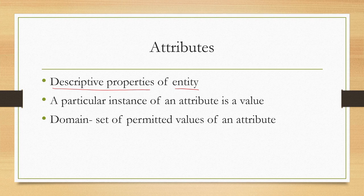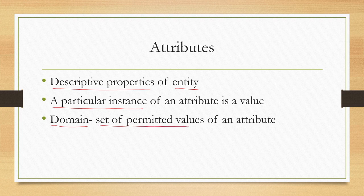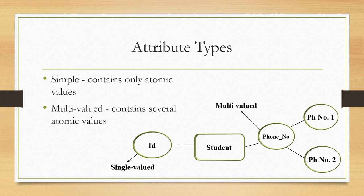Attributes are broad generic terms. We can assign values to an attribute, and that is a particular instance of an attribute. We can also define a domain of values for an attribute, which is a set of permitted values for that particular attribute. There are broadly two types of attributes: one is a simple attribute, which contains only atomic values, and the other is a multivalued attribute, which can contain several atomic values.